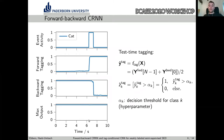However, this is only for training. At test time, we only want to have one prediction for the whole signal. Here we combine the last prediction of the forward tagging, which is at the last frame, and the last prediction of the backward tagging, which is at the first frame, and simply average those two predictions.